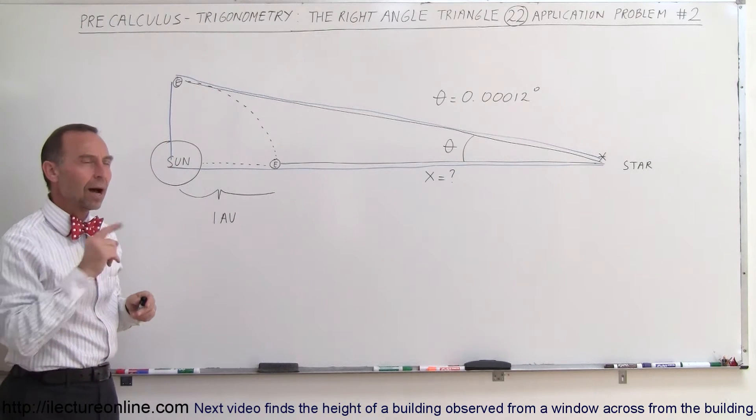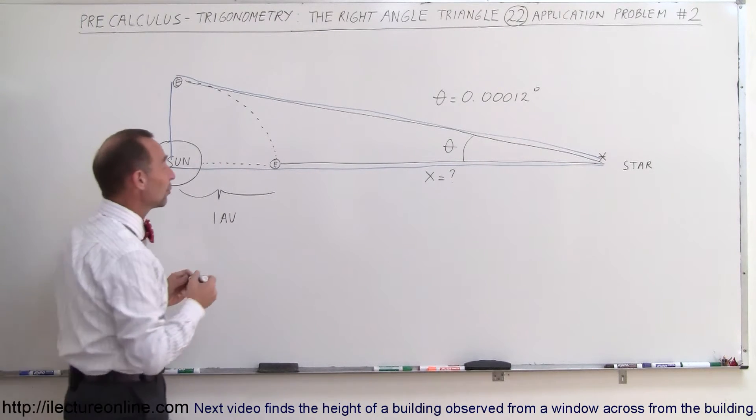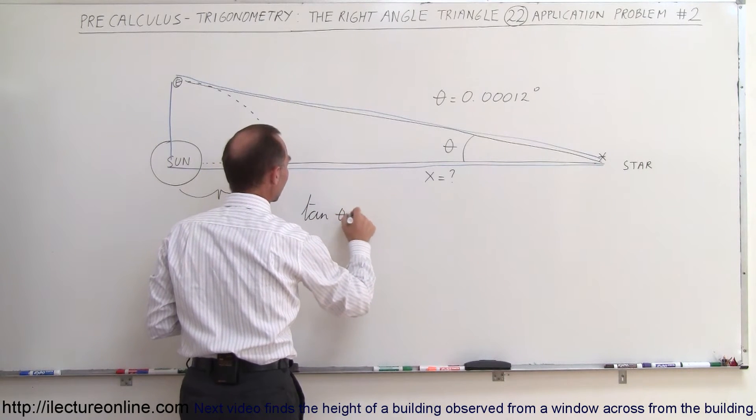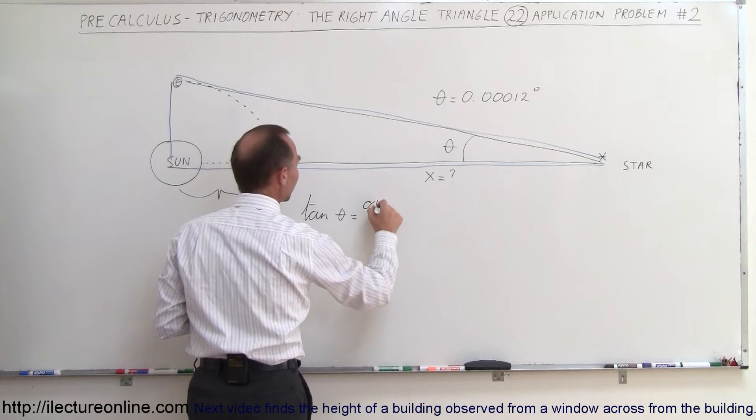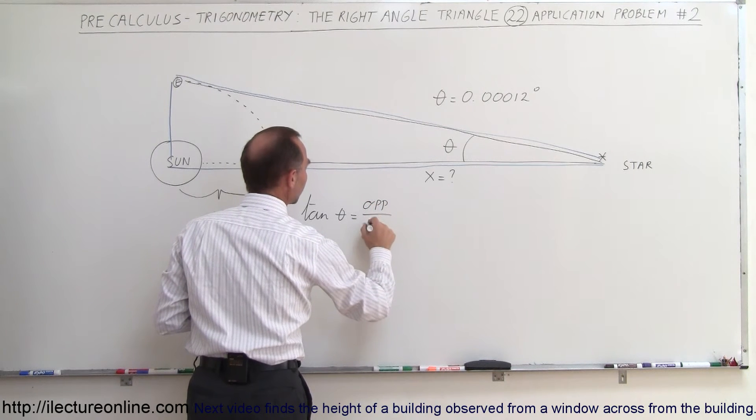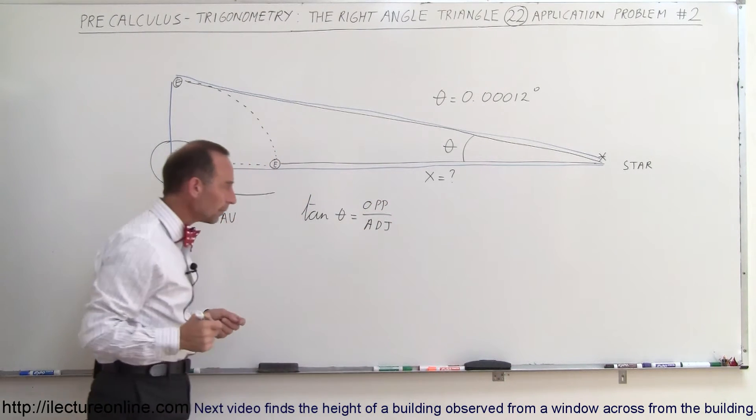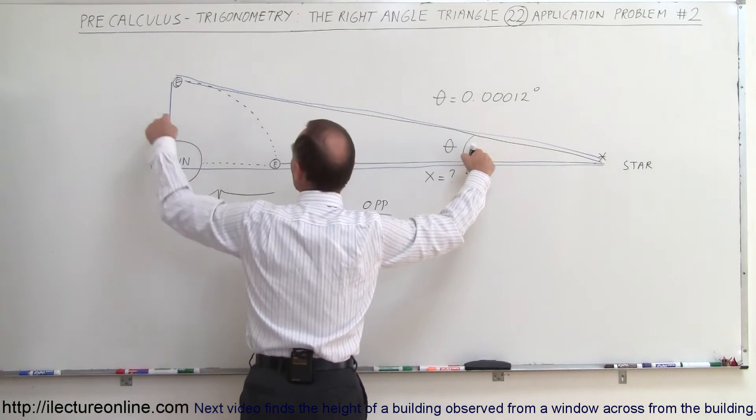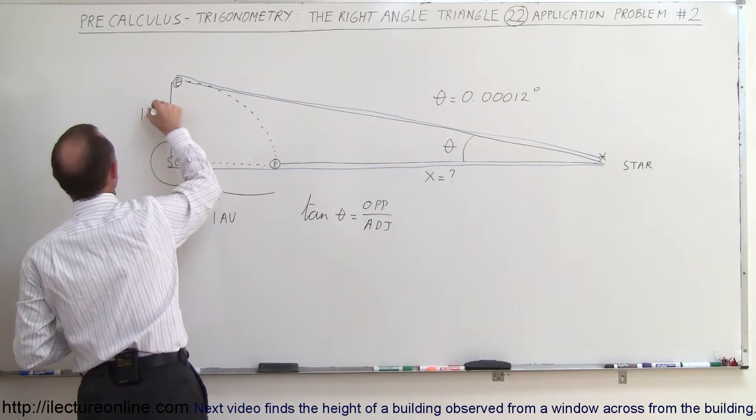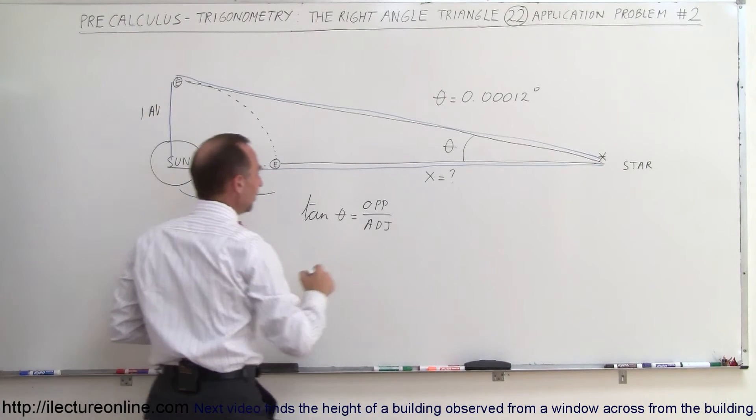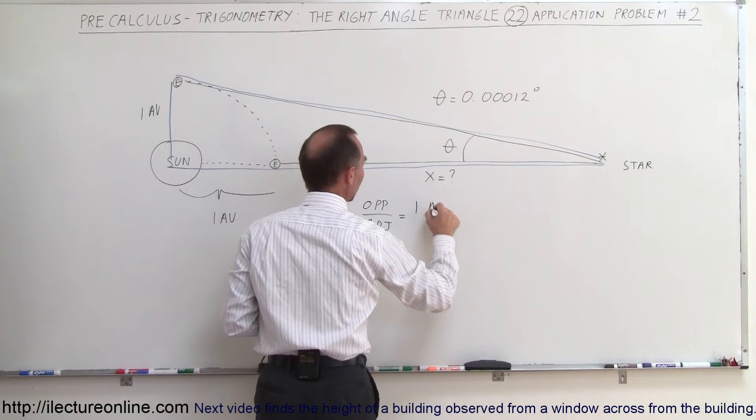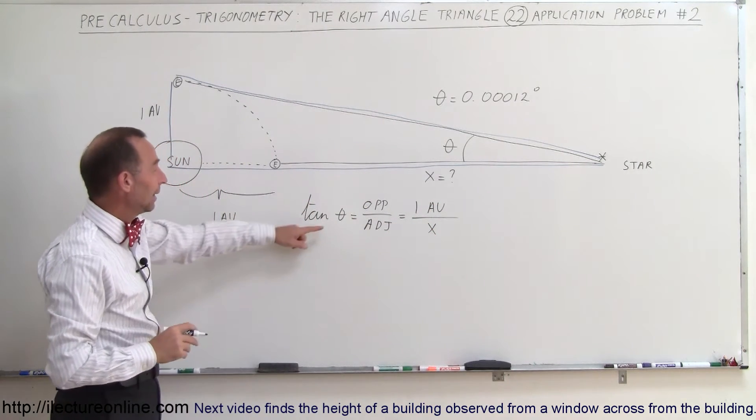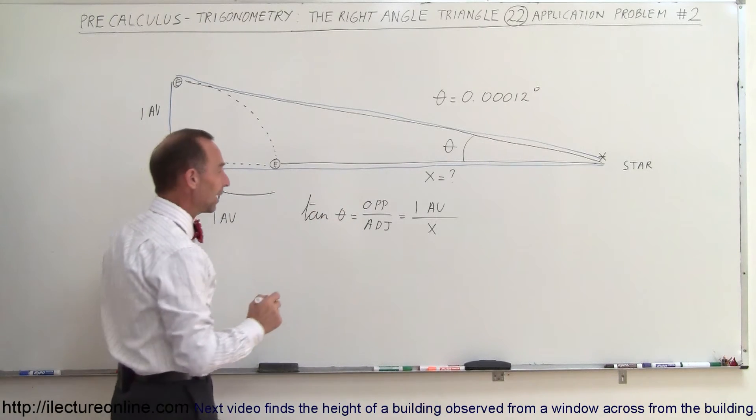That means opposite side, adjacent side, angle. The tangent of theta is the right trigonometric function. So the tangent of theta is defined by the ratio of the opposite side divided by the adjacent side. And in this case, the opposite side to the angle would be equal to one astronomical unit, the distance between the Earth and the Sun. So this is one astronomical unit, and the adjacent side is X. That's what we're looking for, the unknown. And then the angle theta is given, so we have to solve this equation for X.